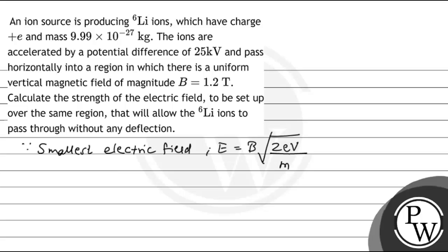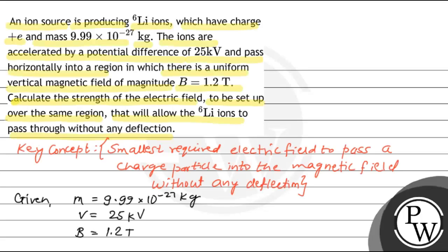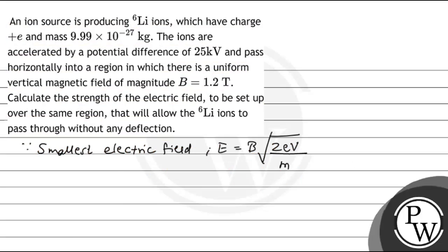So the value of E equals B value is 1.2, root of 2 into 1.6 into 10 to the power minus 19, that's the charge, into voltage which is 25, divided by m value which is 9.99 into 10 to the power minus 27.